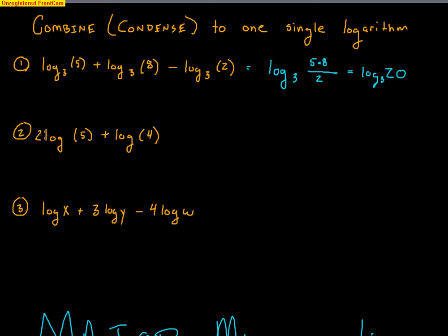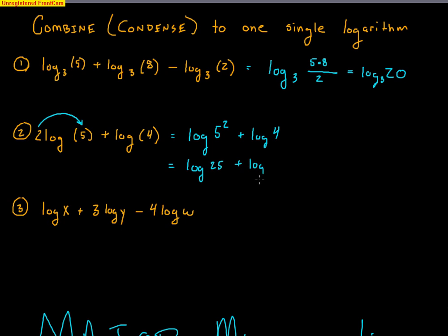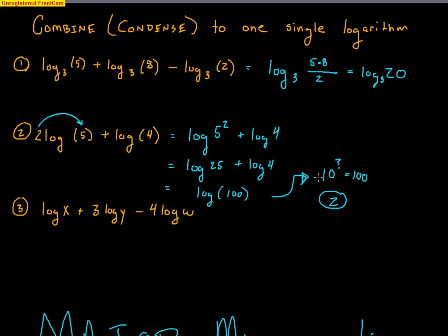Here's another one: 2 log 5 plus log 4. If there's no base written, it's implied to be log base 10. First, I use the exponent rule and put the 2 back up as an exponent: log of 5 squared plus log of 4, which is log of 25 plus log of 4. Combining those with multiplication: 25 times 4 is 100, so the answer is log of 100. Since 10 squared is 100, the final answer is just 2.